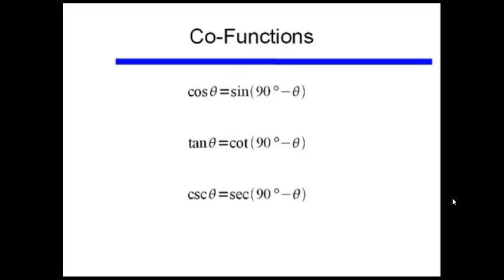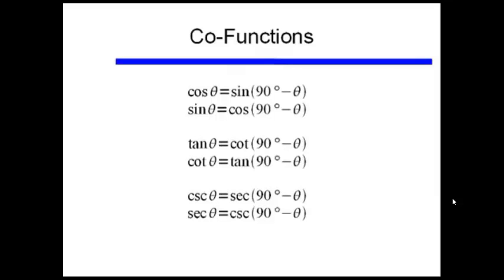We can say this in general form: sine and cosine are co-functions — that is, complementary functions. 90 degrees minus an angle is the complement of that angle. In general, cosine of theta equals sine of 90 degrees minus theta, and likewise for tangent and cotangent, and cosecant and secant. It also goes the other direction: sine of theta equals cosine of 90 degrees minus theta, and likewise for cotangent and tangent, and secant and cosecant.